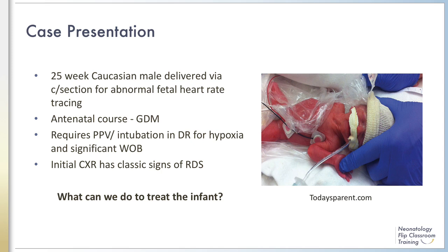Let's return to the case presented in Module 4. This is a case of a 25-week preterm infant delivered for an abnormal fetal heart tracing. In the delivery room, the infant requires positive pressure ventilation and is noted to subsequently have increased work of breathing, increased FiO2 requirement, and reticular granular pattern, air bronchograms, and low lung volumes on chest X-ray. You suggest that the infant has classic signs of respiratory distress syndrome.